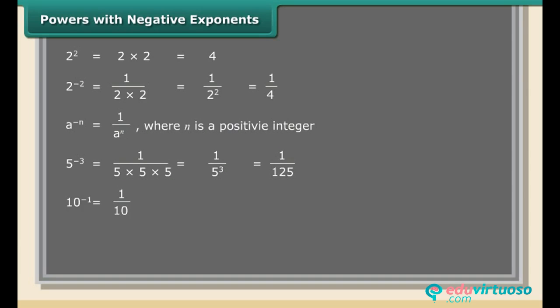10 raised to the power minus 1 equals 1/10. 10 raised to the power minus 2 equals 1/10 ÷ 10 = 1/(10 × 10) = 1/100, which equals 1 upon 10 raised to the power 2.